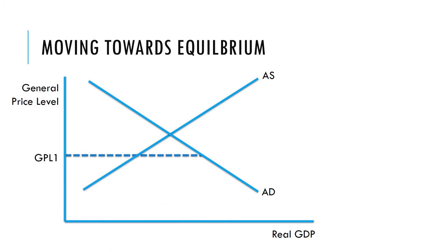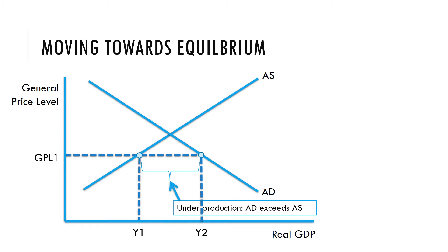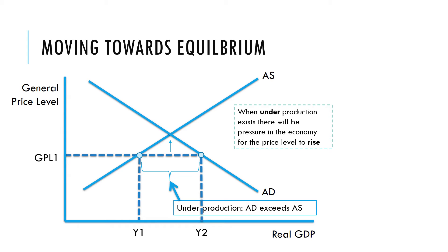Now let's look at a second example where the price level is much lower. At this price level, planned spending in the economy would be Y2 and the planned level of output would be Y1. In this situation we have underproduction, as planned spending exceeds planned output. We would expect there to be pressure for price levels to rise — where demand exceeds supply, prices are bid up.